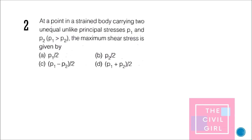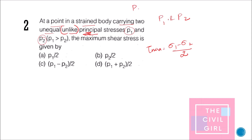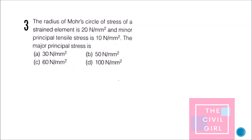Question 2: At a point in a strained body carrying two unequal unlike principal stresses p1 and p2, what is the maximum shear stress? The formula for tau max is (sigma 1 minus sigma 2) / 2. Since p1 and p2 are unlike — meaning they act in opposite directions — if p1 is positive, p2 is negative. Therefore, tau max becomes (p1 + p2) / 2.